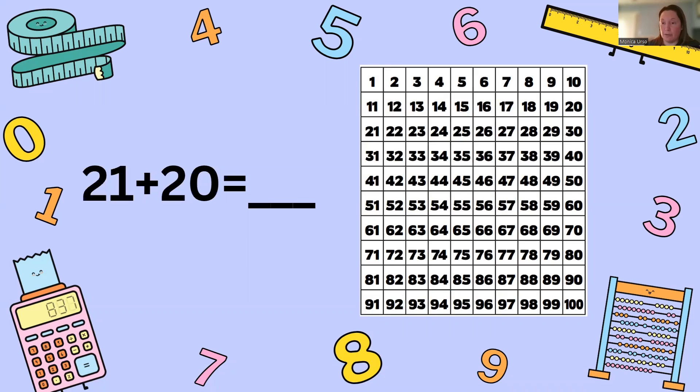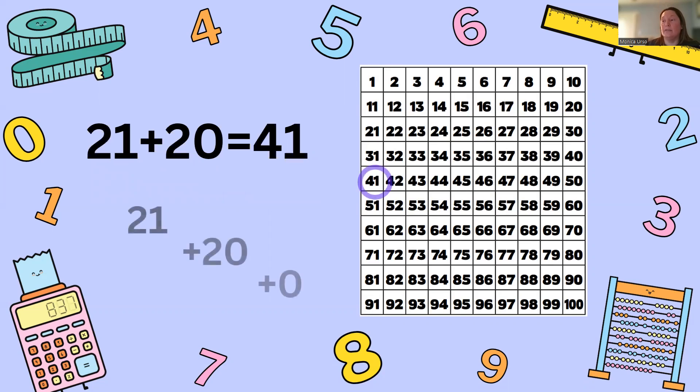Okay so if you want to pause the video and solve the problem then you can pick it back up again. Now to find 21 plus 20 we start with 21. We add 20 which is sliding down two rows to 41 and there's no ones to add so it's just 21 plus 20 plus zero so our answer is 41.